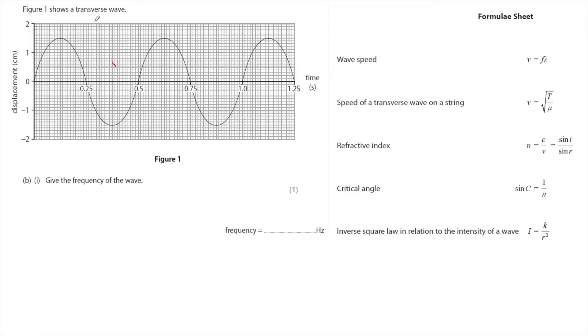Figure one shows a transverse wave. When you see a sketch like this, always look at the units to start with. We've got centimeters of displacement and we've got seconds for time, and it says give the frequency of the wave. So by just giving one mark and say give the frequency, it doesn't need a complicated calculation.